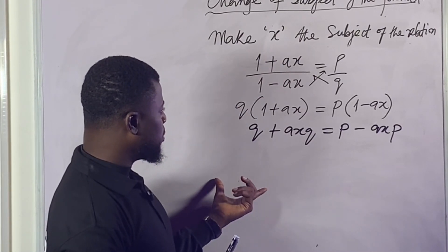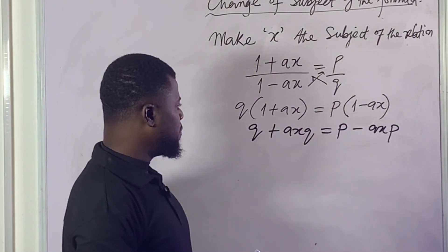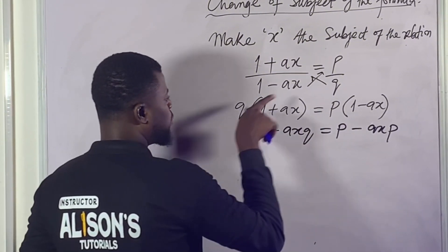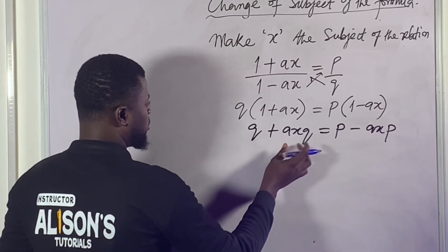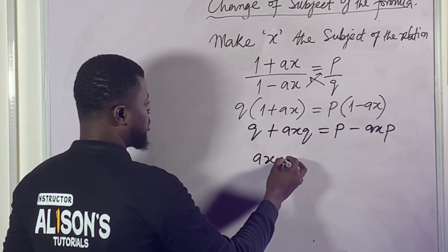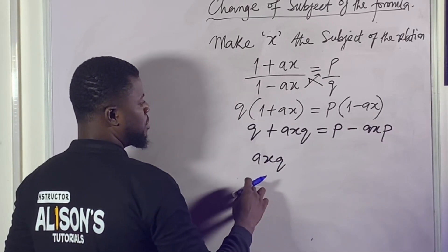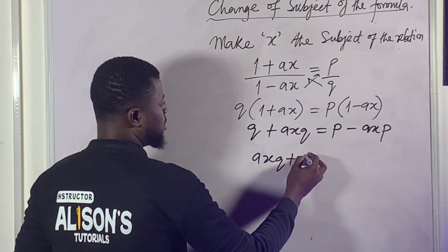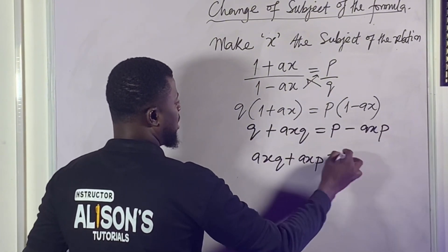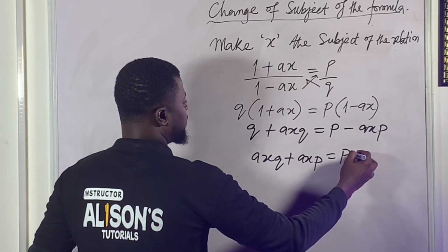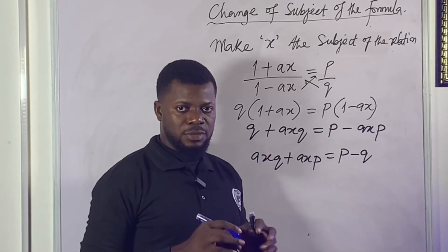So what do we need to do at this point? Let's see how we can bring the x terms together. To achieve that, we can move q over there and bring the axp term over here. So ax times q, and if this negative axp crosses, then we have plus axp. This will give us p here. And if q moves to that part, we have negative q. I hope that seems simple.